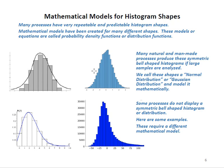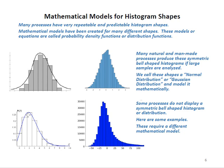Sometimes a data set gives you a different type of distribution — one that doesn't look like a bell shape, where the tail or starting point is different. For these, you have to use a different mathematical model because they don't display the usual symmetric bell-shaped histogram. The mathematical model refers to the equations describing all this data.